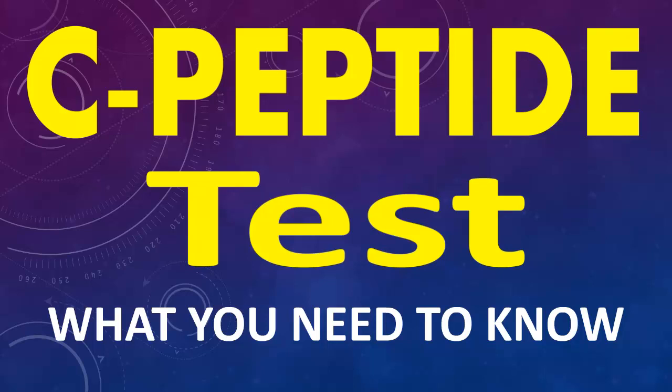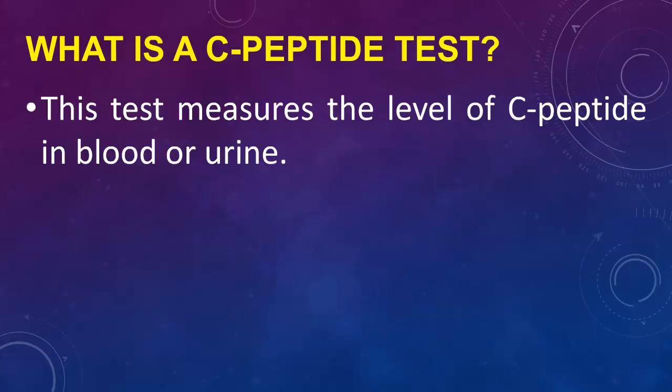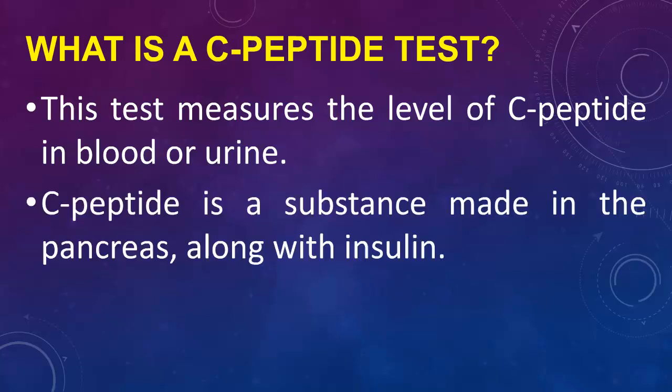C-peptide test: what you need to know. A C-peptide test measures the level of C-peptide in blood or urine. C-peptide is a substance made in the pancreas, along with insulin.